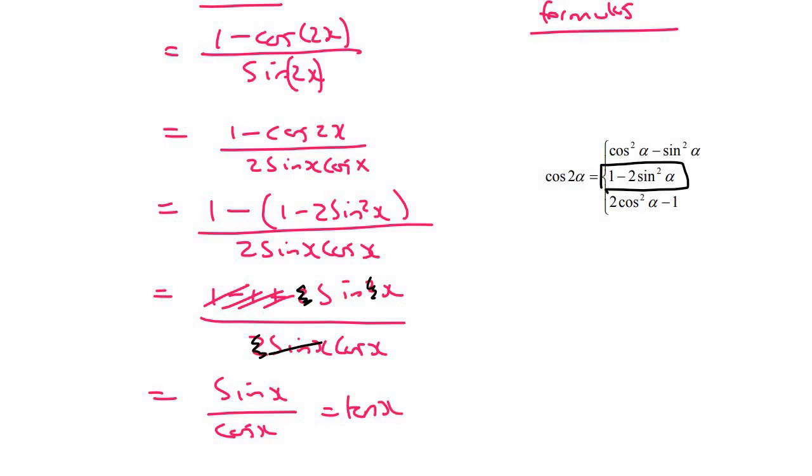Sin x over cos x is the same as tan x. And therefore, left-hand side is the same as the right-hand side.